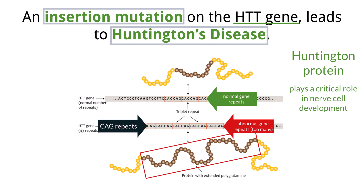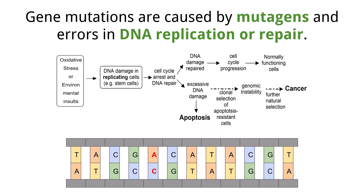Over time, this causes progressive brain damage, leading to the symptoms of Huntington's disease, such as movement disorders, cognitive decline, and emotional disturbances. This is a clear example of how an insertion mutation, especially a repeat expansion, can have delayed but devastating effects on health.